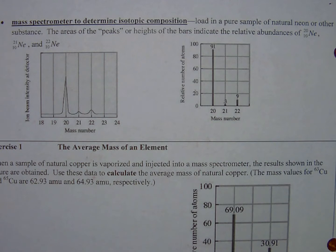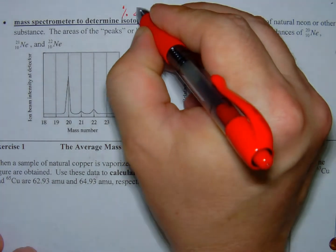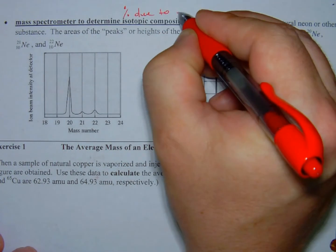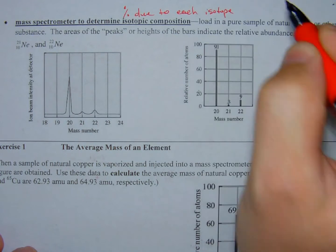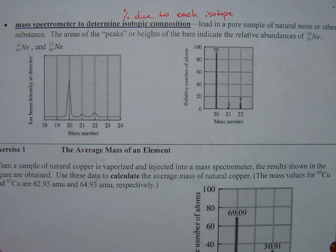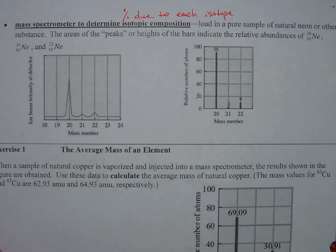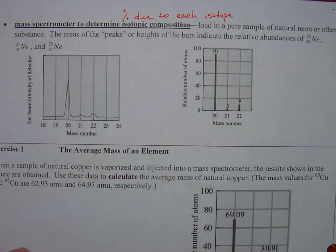We can use a mass spectrometer to determine isotopic composition. So that's just the percentage due to each isotope. Again, referring to carbon-12, 13, and 14 - what percentage is carbon-12, what percentage is carbon-13, what percentage is carbon-14 - you can use a mass spectrometer to figure that out.